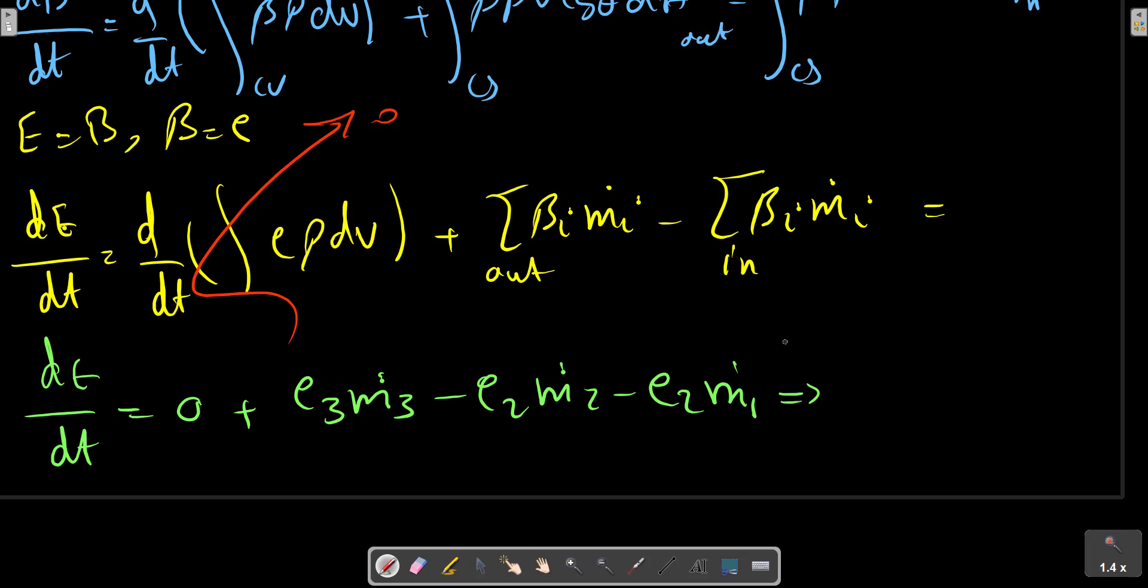With replacing M dot equals to rho V A for each cross-sectional area, we can obtain the relation as: dE/dt equals to minus E_1 rho_1 A_1 V_1 plus E_2 rho_2 A_2 V_2 plus E_3...